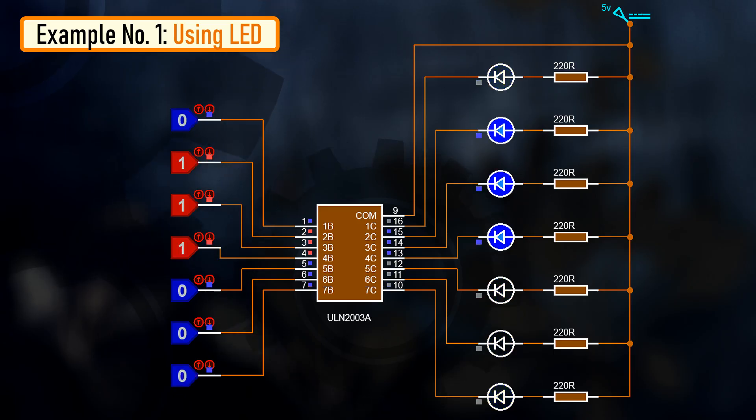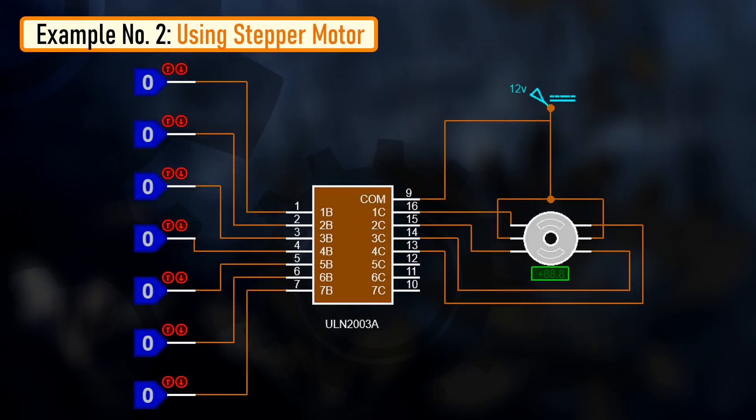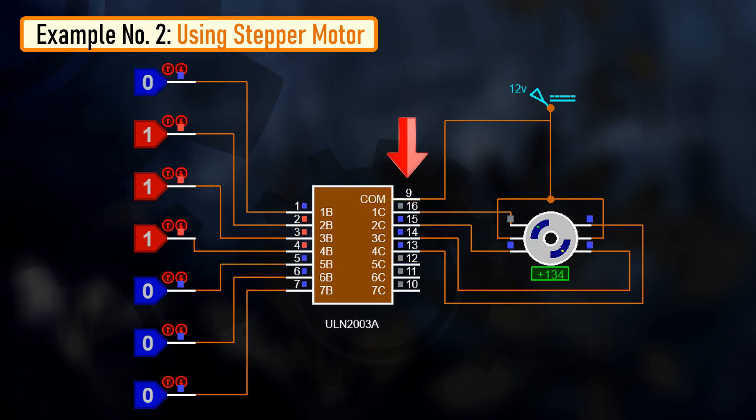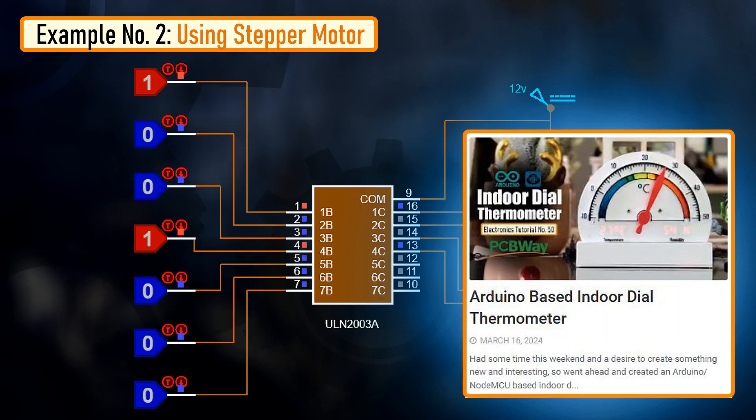In my second example, I am driving a unipolar stepper motor using this IC. In this setup, I am using pin number 1 to 4 for input and pin number 13 to 16 for output. Each output pin is rated at 500mA. Pin number 9 has the spike suppressor diode and is connected to the positive terminal. By sending combinations of 0s and 1s to the 4 input pins, we can rotate our stepper motor. I have used this setup in my award winning video tutorial, NodeMCU based 3D printed gauge thermometer. The link is in the description below.